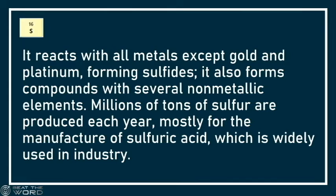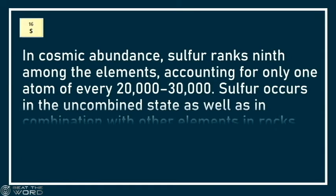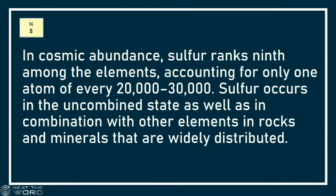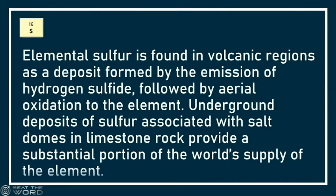Millions of tons of sulfur are produced each year, mostly for the manufacture of sulfuric acid, which is widely used in industry. In cosmic abundance, sulfur ranks ninth among the elements, accounting for only one atom of every 20,000–30,000. Sulfur occurs in the uncombined state as well as in combination with other elements in rocks and minerals that are widely distributed. Elemental sulfur is found in volcanic regions as a deposit formed by the emission of hydrogen sulfide, followed by aerial oxidation to the element. Underground deposits of sulfur associated with salt domes and limestone rock provide a substantial portion of the world's supply of the element.